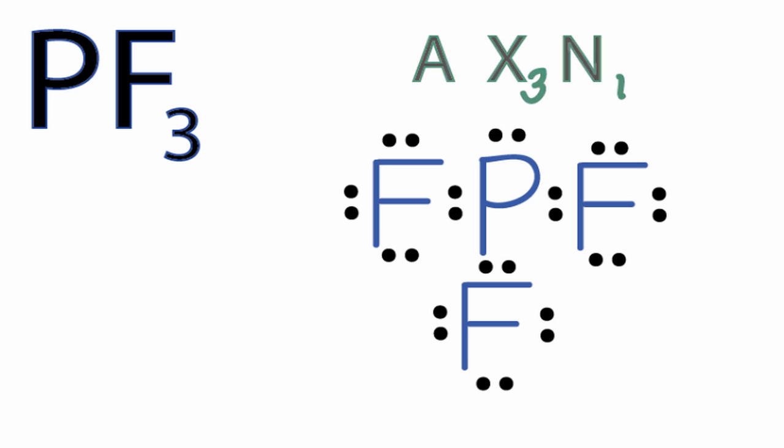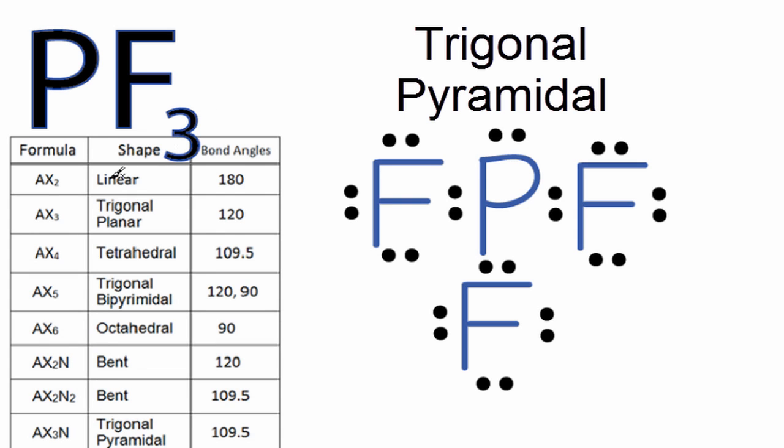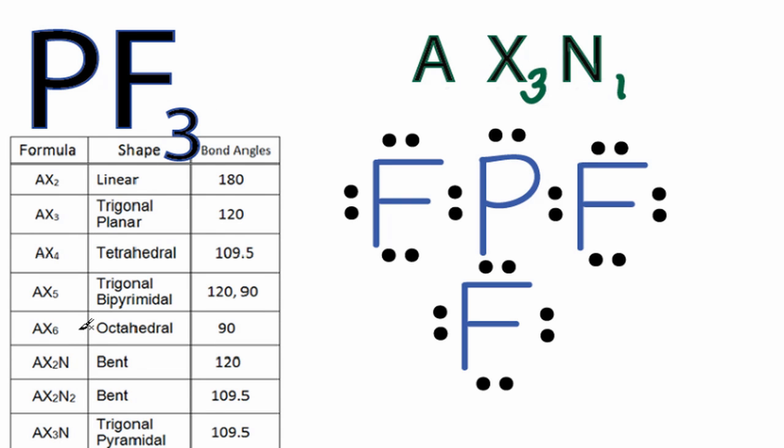We could have memorized that AX3N is trigonal pyramidal, or if we had it available, we could look it up in a table. As we go down our table, we see AX2, AX3, all the way down to AX6, then we get to AX2N, AX2N2, and there at the bottom AX3N, which is trigonal pyramidal and has bond angles of about 109.5 degrees. They'll be a little different for this structure here.